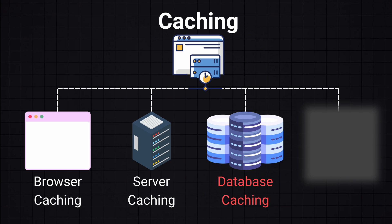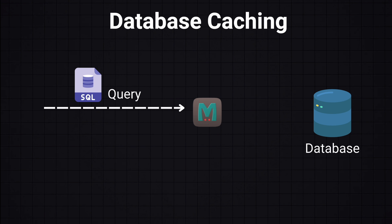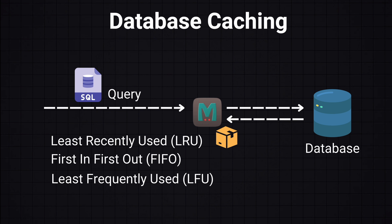Database caching is another crucial aspect, and it refers to the practice of caching database query results to improve the performance of database-driven applications. It is often done either within the database system itself or via an external caching layer like Redis or Memcache. When a query is made, we first check the cache to see if the result has been stored. If it is, we return the cached data, avoiding the need to execute the query against the database. If not, the query is executed, and the result is stored in the cache for future requests. This is beneficial for read-heavy applications where some queries are executed frequently, and we use the same eviction policies as for server-side caching.